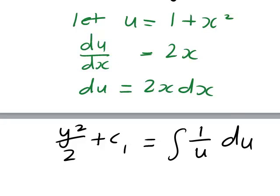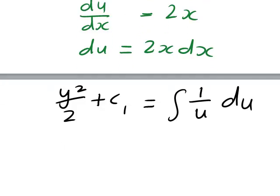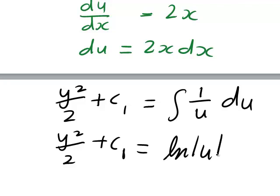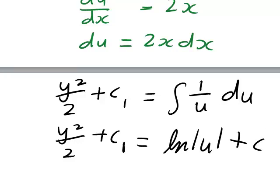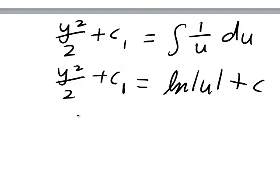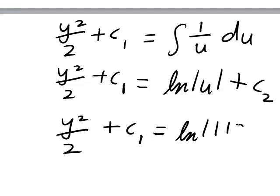And when we now anti-differentiate the right-hand side, that gives us y²/2 plus c₁ is equal to ln|u| plus c. And we can now bring back u equals x² + 1, I'll call that c₂ let's say, so y²/2 plus c₁ equals ln|1 + x²| plus c₂.